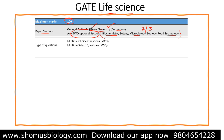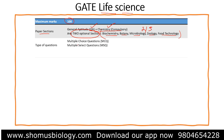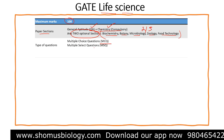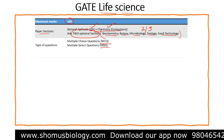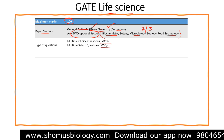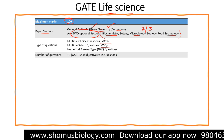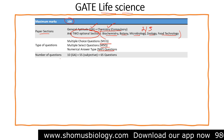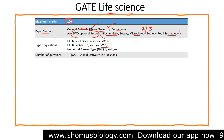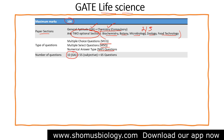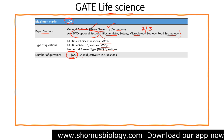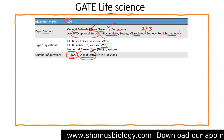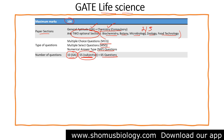The types of questions are multiple choice questions (MCQ), multiple select questions (MSQ), and numerical answer type questions. There are 10 questions from general aptitude and 55 questions from the subjective sections, giving a total of 65 questions.